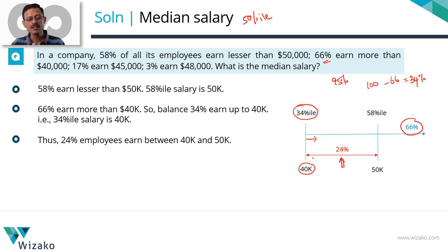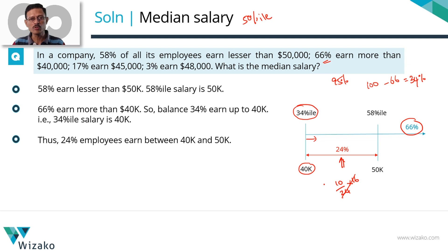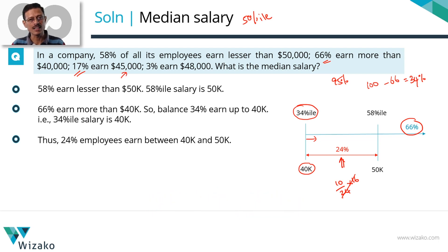One very important thing: don't say that between $40,000 and $50,000 there are 24% of the employees equally distributed, and therefore compute 10 divided by 24 into 16 — because 34 plus 16 gives the 50th percentile — and come up with an answer of $46,666. That would be incorrect because this question does not tell us that the income distribution is uniform. In fact, it is not uniform — 17% of the employees are earning one single value. So you can't make this assumption. There will definitely be an answer choice saying $46,666, so don't fall for that trap.